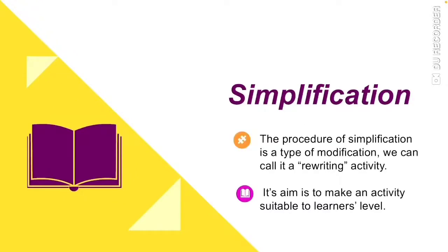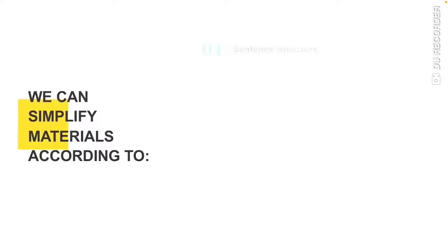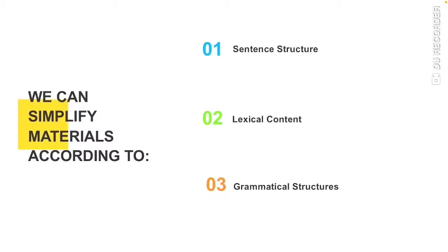The procedure of simplification is a type of modification — we can call it a rewriting activity. Its aim is to make an activity suitable for learners' level. We can simplify materials according to sentence structure, lexical content, and grammatical structures. In sentence structure, sentence length is reduced or a complex sentence is rewritten as simpler ones. In lexical content, complicated words are replaced with simpler ones. In grammatical structures, advanced grammar structures are transformed into simpler ones.